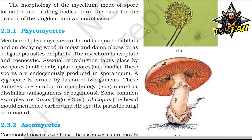Phycomycetes: Members are found in aquatic habitats, on decaying wood in moist and damp places, or as obligate parasites on plants. The mycelium is aseptate and coenocytic. Asexual reproduction takes place by zoospores (motile) or aplanospores (non-motile), produced endogenously in a sporangium. A zygospore is formed by fusion of two gametes that are similar in morphology (isogamous) or dissimilar (anisogamous or oogamous). Common examples include Mucor, Rhizopus (the bread mold), and Albugo (the parasitic fungus on mustard).